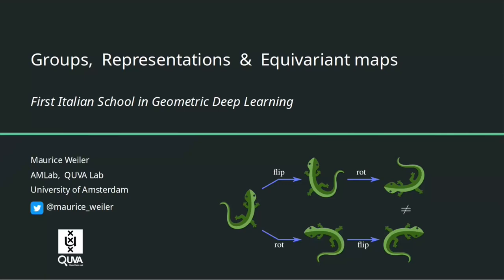Welcome. I'm going to start with a lecture about groups, representations, and equivariant maps, and why we need group theory for geometric deep learning. The reason is that many geometric structures are modeled by groups, so we first need to understand groups to understand geometric deep learning.